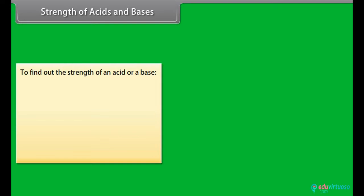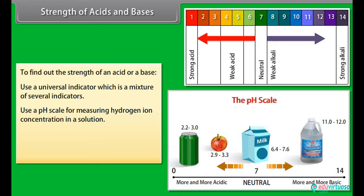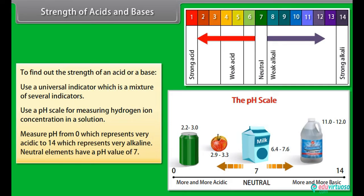Strength of acids and bases. You need to use a universal indicator to find the amounts of ions present in a solution or to find out how strong an acid or base is. The universal indicator is a mixture of several indicators. It shows different colors at different concentrations of hydrogen ions in a solution. A pH scale is a scale of measuring hydrogen ion concentration in a solution. You can measure pH from 0, which represents very acidic, to 14, which represents very alkaline. Neutral elements have a pH value of 7.